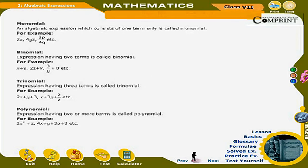Monomial: An algebraic expression which consists of one term only is called a monomial. For example: 2x, 4yz, 3p/4q, etc.